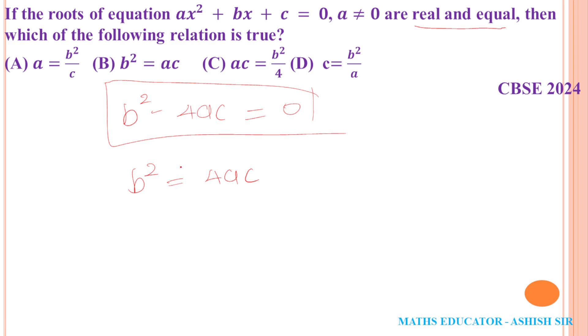This is an option here. Now, 4 is multiplication here, ac. This is division, so b²/4=ac. This is an option here.